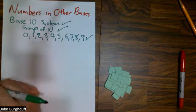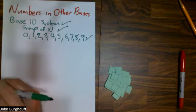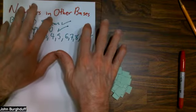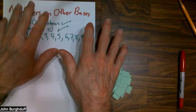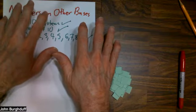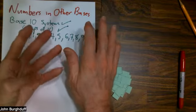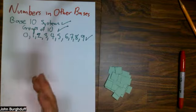Zero counts as one of them, and then you go 1 through 9. As soon as you hit 10, that's one group of 10 and no units. So base 10 is built on groups of 10 and having 10 digits. It's pretty obvious, historically, why we ended up with the base 10 system. We all have 10 fingers. So base 10 makes a lot of sense.